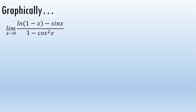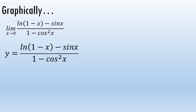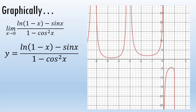One way to evaluate a limit is by looking at the graph of the associated equation. The graph of y equals the natural log of 1 minus x minus the sine of x all over 1 minus the cosine squared of x looks like this.